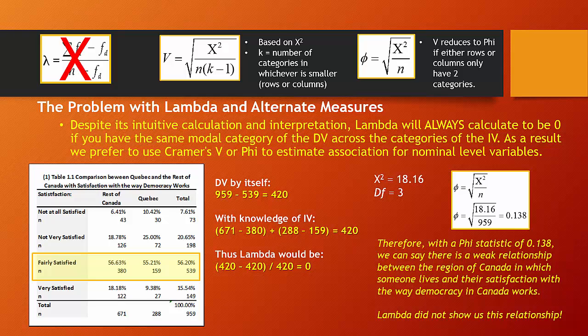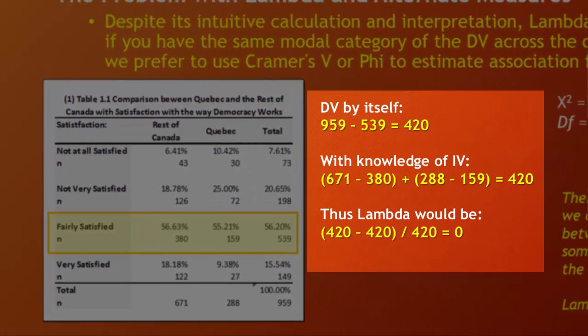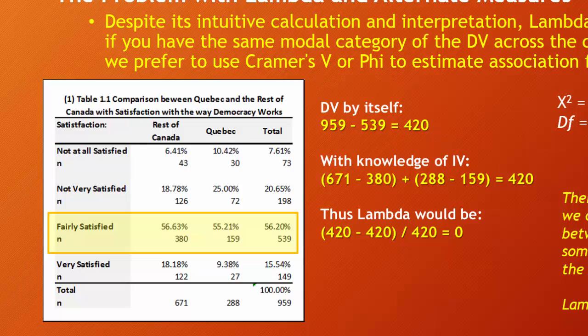There's a problem with lambda. Despite its intuitive calculation and interpretation, lambda will always calculate to zero if you have the same modal category of the dependent variable across the categories of the independent variable. For example, look at this table examining satisfaction with democracy in Canada, with the independent variable dividing our sample into those in Quebec versus the rest of Canada. The mode is the same for both groups — 'fairly satisfied.' When you do the calculation, the errors using the independent variable still total 420, same as without it, giving us a numerator of zero and a lambda of zero.